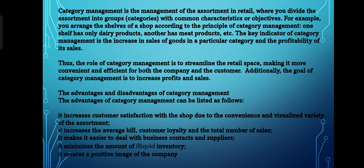The key indicator of category management is the increase in sales of goods in a particular category and the profitability of its sales. For example, if dairy products are the focus, the shelves will contain all dairy products — different brands but the same category — so the customer can select which brand they want and which is affordable to them.